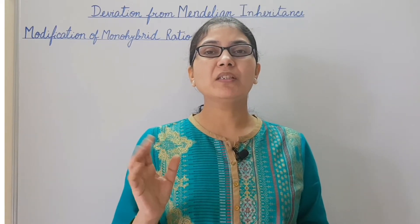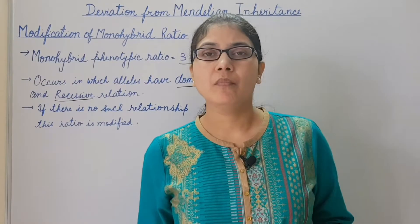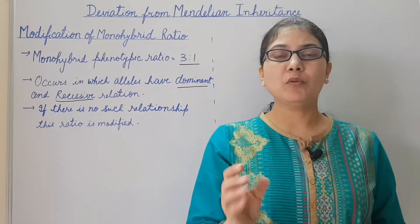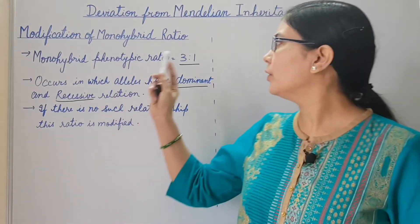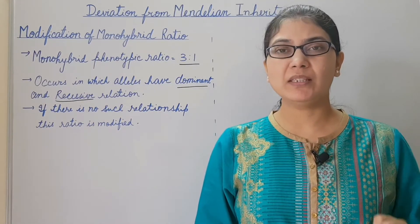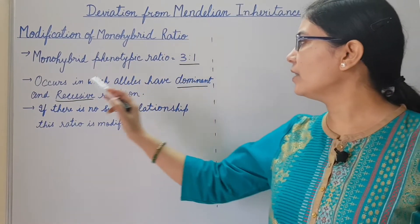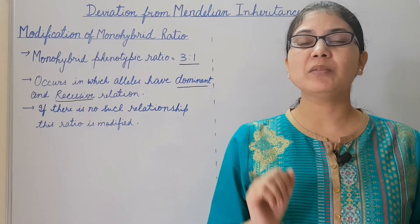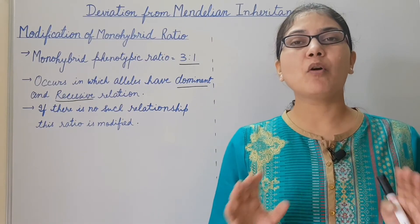First we will discuss about modification in the monohybrid ratio. Mendel proposed the phenotypic monohybrid ratio of 3:1. But this phenotypic ratio is only seen when a pair of alleles has a dominant and recessive relation. If no such relation is present between the pair of alleles, then this monohybrid ratio is modified.